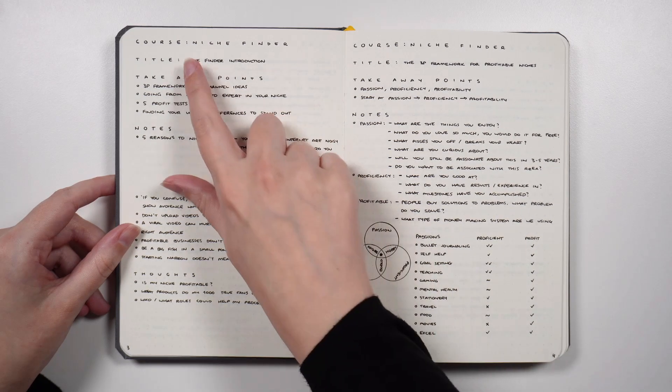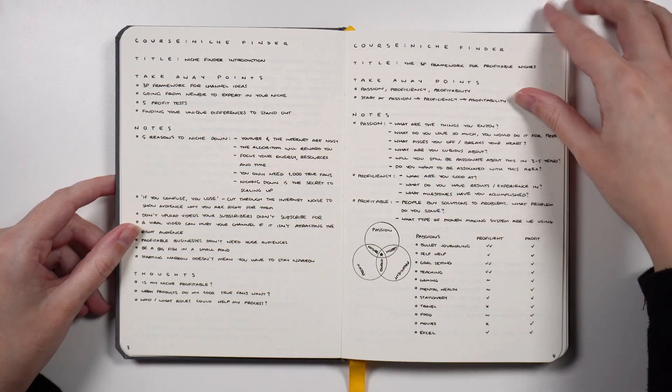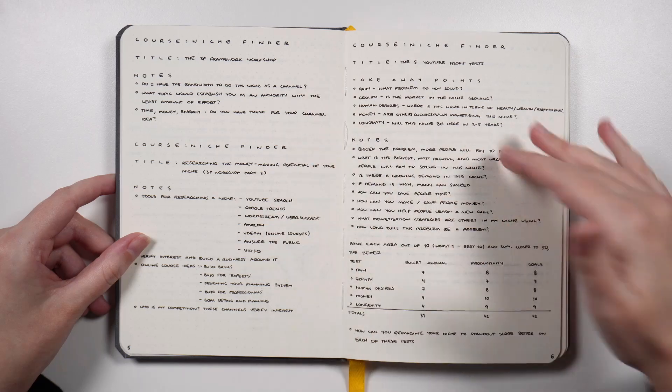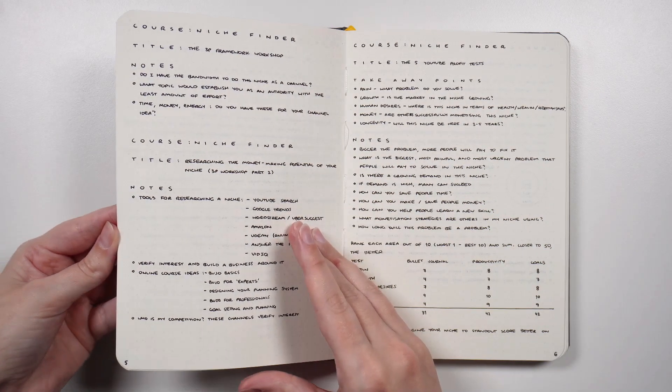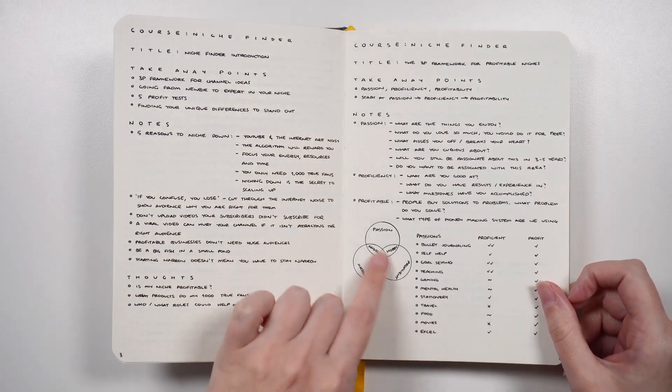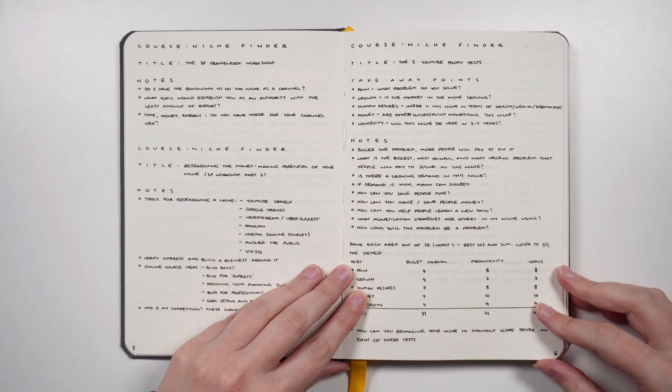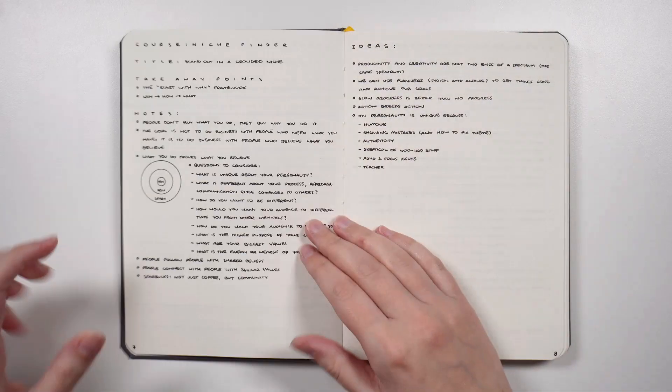This course had multiple parts so you can see Niche Finder, Niche Finder, and if we flip over we have some more of Niche Finder, more notes. Obviously in some parts, depending on the type of notes I need to take, I might put in some little diagrams or a little kind of table looking thing. If we flip over I think I have another little diagram.